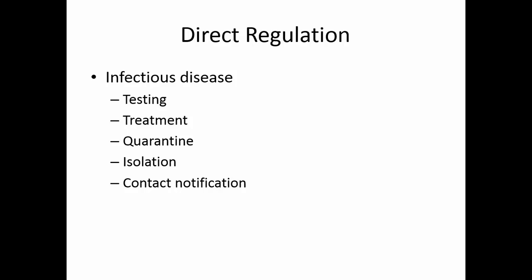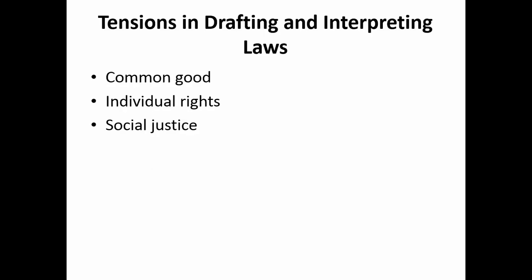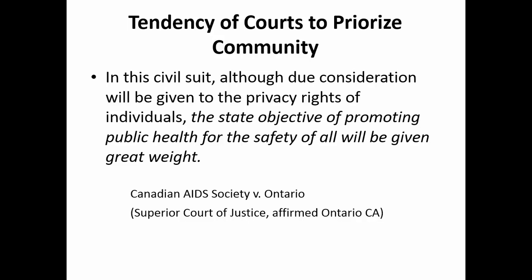How are decisions made to enact such laws? Both the legislatures and the courts who interpret these laws are constantly needing to juggle the common good against individual rights. They also need to take into account concepts of social justice, which may suggest that laws should only be enacted if they do not worsen the plight of those least fortunate in society. The courts in interpreting such laws tend to be deferential to the common good. The Ontario Superior Court of Justice gives a nod to individual privacy rights, indicating due consideration, but then indicating that the state objective of promoting public health for the safety of all will be given great weight.